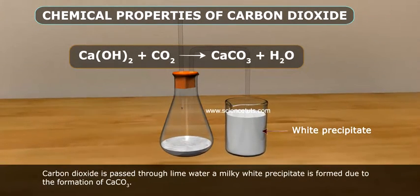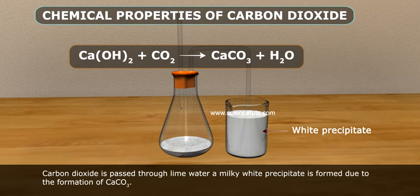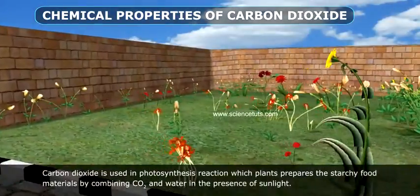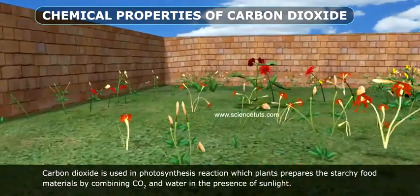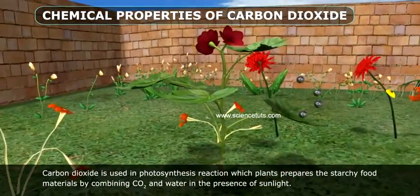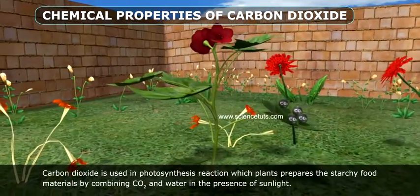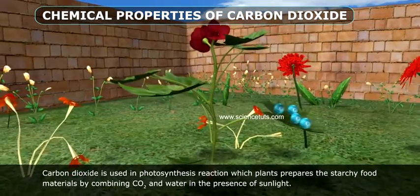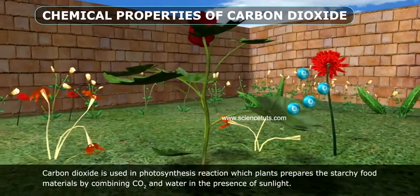When carbon dioxide is passed through lime water, a milky white precipitate is formed due to the formation of CaCO3. Carbon dioxide is also used in the photosynthesis reaction, in which plants prepare starchy food materials by combining CO2 and water in the presence of sunlight.